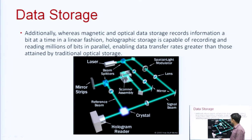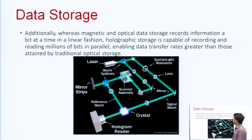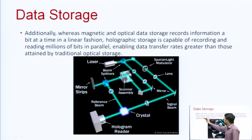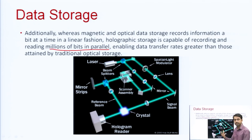This diagram shows how holographic technology can be used to record data — data is recorded in the form of holograms in a crystal medium. Whereas magnetic and optical data storage record information one bit at a time in a linear fashion, holographic storage is capable of recording and reading millions of bits in parallel, enabling data transfer rates greater than those of traditional optical storage.